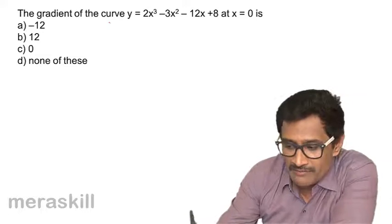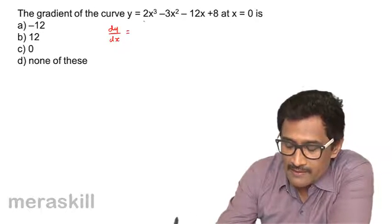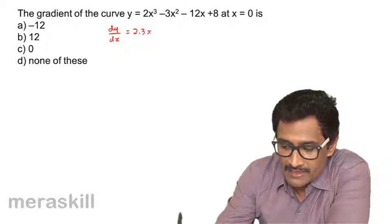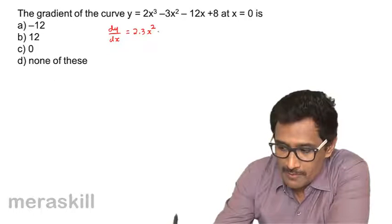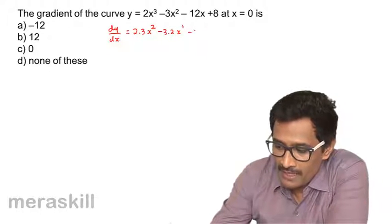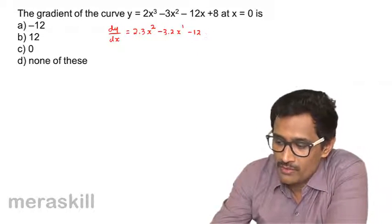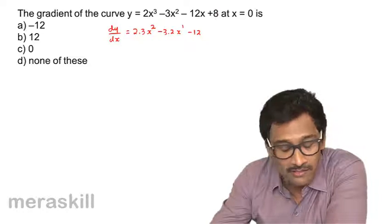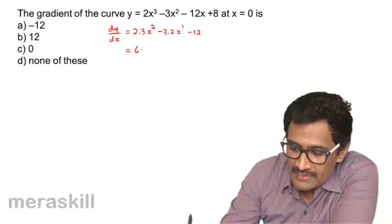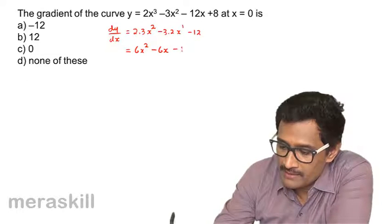We need to find dy/dx. So dy/dx is 2 × 3x^(3-1) - 3 × 2x^(2-1) - 12 × x^(1-1), and the derivative of a constant is 0. This simplifies to 6x² - 6x - 12.